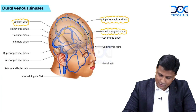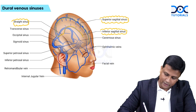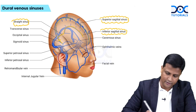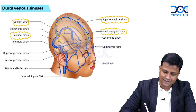There is also the occipital sinus coming from below, combining at this point. All the sinuses converge at one point, which is referred to as the confluence of sinuses.